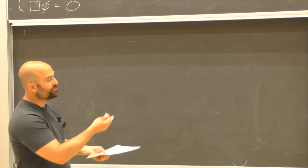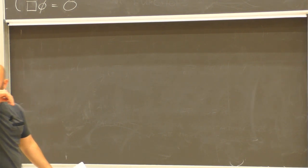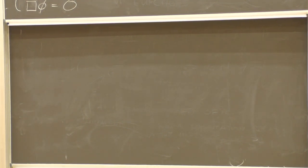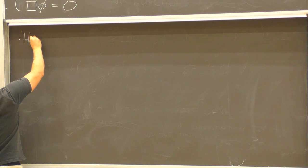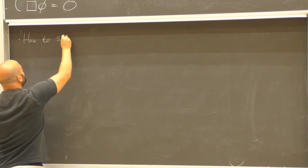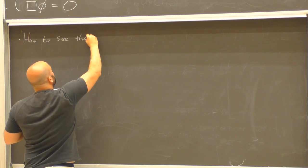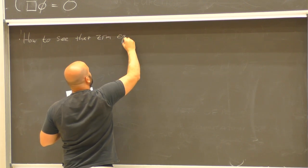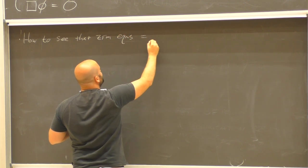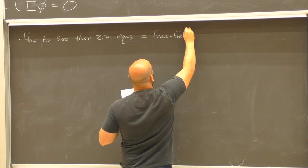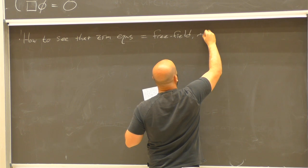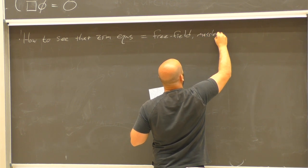You can amuse yourself by seeing that this also works for the dotted ones. It's actually slightly more non-trivial to see what happens in the scalar case. So how do we see that the zero rest mass equations are essentially the same as the massless free field equations?